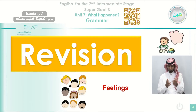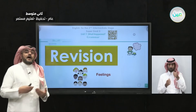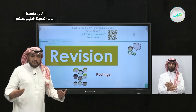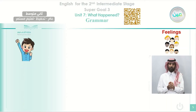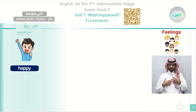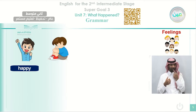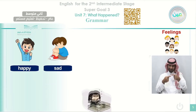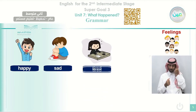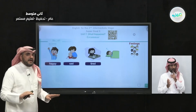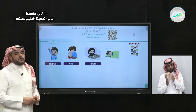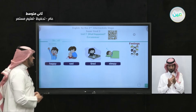Before we start, as always, we make a quick revision on the previous lesson. We described an accident and talked about the feelings that people sometimes have. We have different feelings in different situations. This one feels happy. How does this boy feel? He feels sad — the opposite. And this girl, how does she feel? She feels tired, exhausted, because she did much work. And this guy is sleepy — he is about to sleep, not sleeping yet.